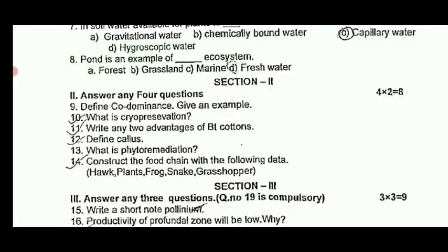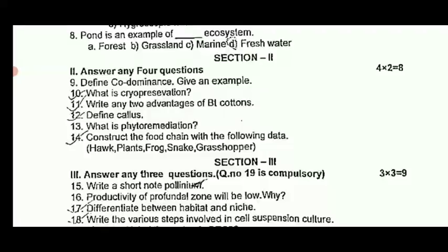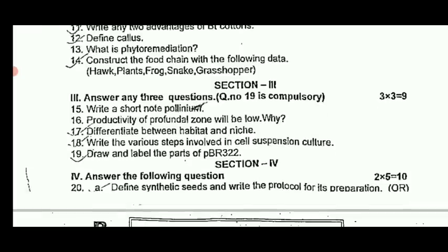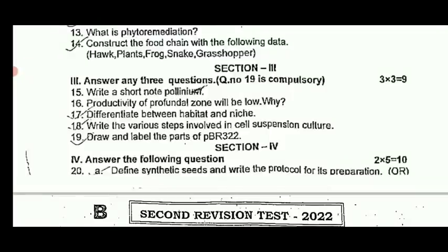What is cryopreservation? Write any two advantages of BT cotton. Define callus. What is phytoremediation? Construct a food chain with the following data. Write a short note on pollination. Explain the productivity of profrontal zones. Difference between habitat and niche. Write the various steps involved in cell suspension culture.